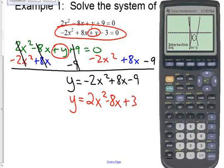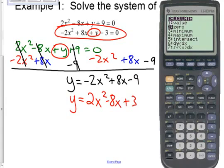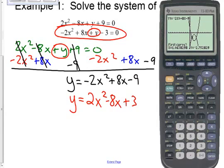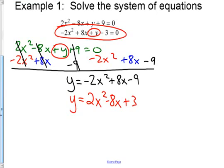And let's do this again. Second, trace, intersect. First curve hit enter. Second curve hit enter. Guess, moving closer to the other intersection. Hit enter. And we get 3, negative 3. So we have, the solution is 3, negative 3, and 1, negative 3. Those are my solutions for this.